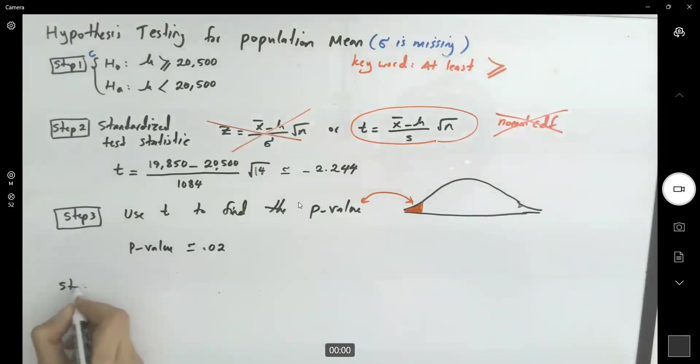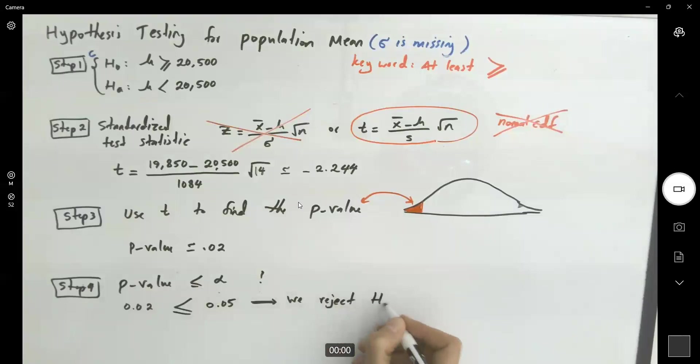Step 4. Now check to see if p-value is less than or equal to alpha or not. p-value is almost 2%. Alpha is 5%. Obviously, 2% is less than or equal to 5%. Since 2% is less than or equal to 5%, so we reject the null hypothesis.